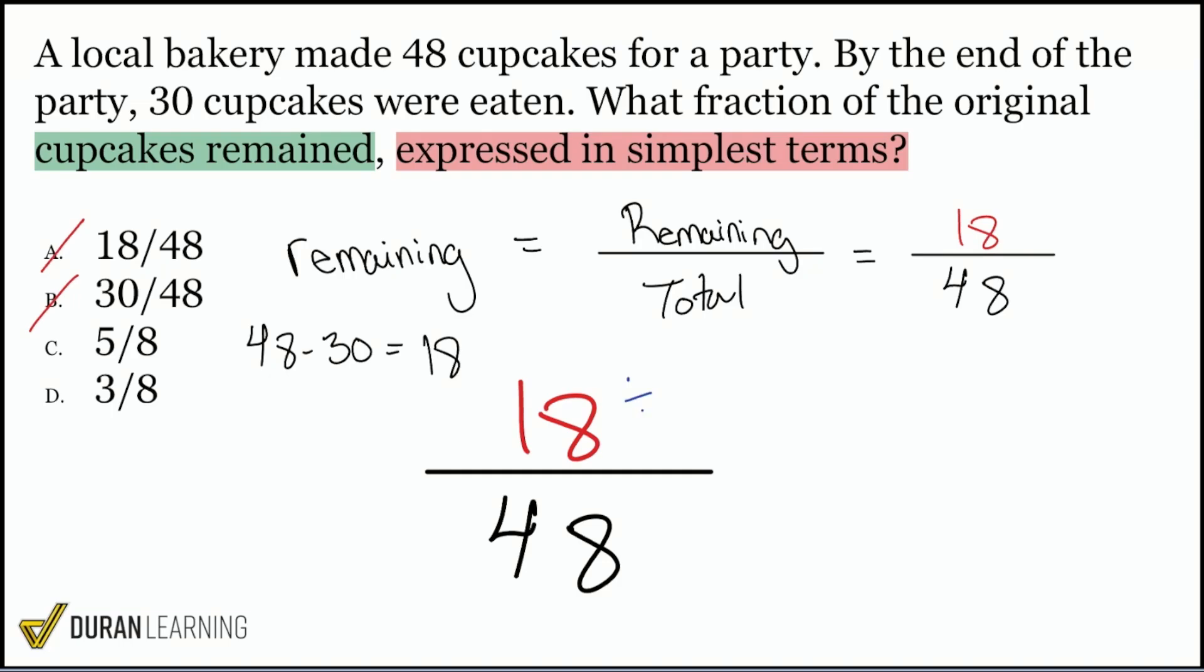Whatever you do to the top, you do to the bottom. Divide both the top and the bottom by 6. 18 divided by 6 is 3. 48 divided by 6 is 8. So there is our correct answer, D, 3 out of 8.